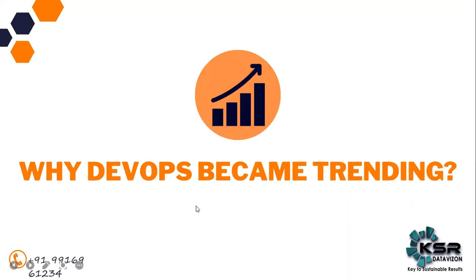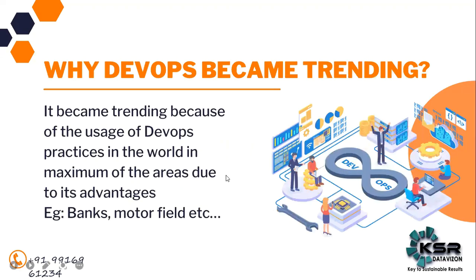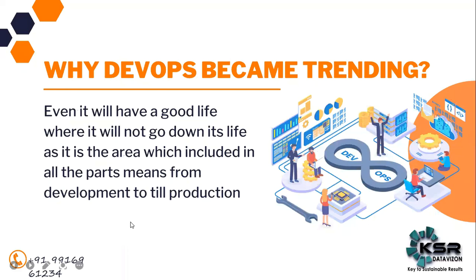The second question is: why did DevOps become trending? DevOps became trending because it is now involved in all areas. For example, in the banking sector, in the mobile sector - everyone is using DevOps culture because they need to develop code and bring products out. DevOps is playing a big role everywhere, and without DevOps there is almost nothing. That is why DevOps became trending - it is a culture and practice used across all projects and areas.